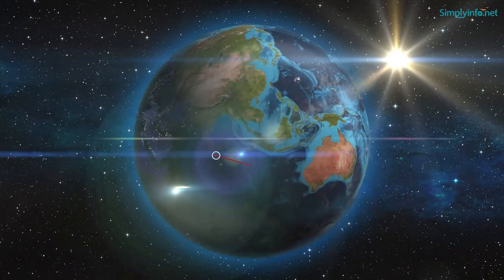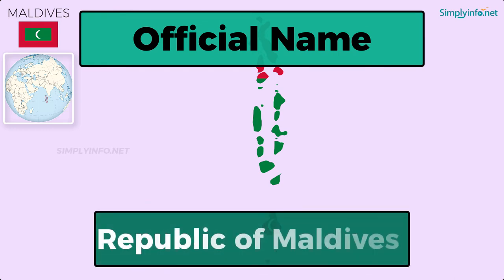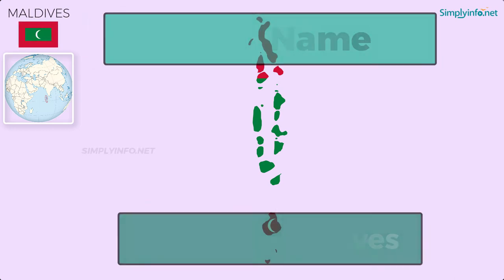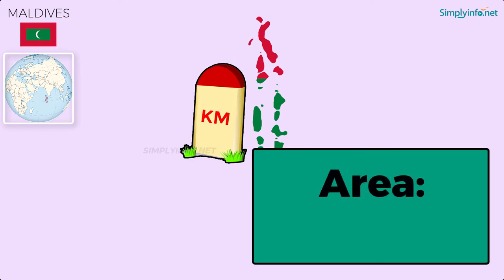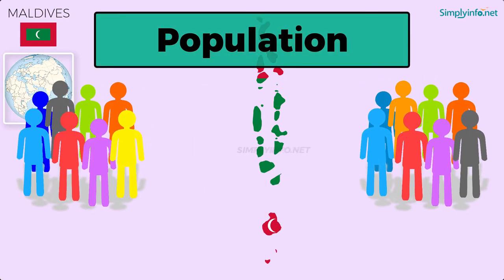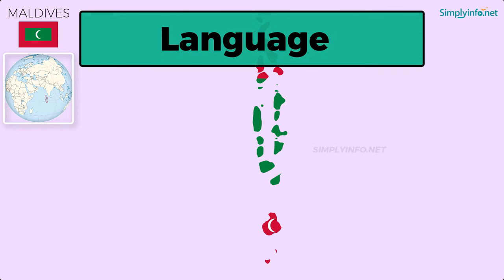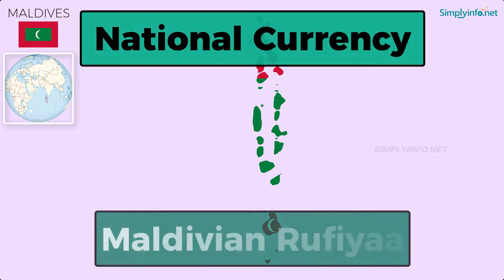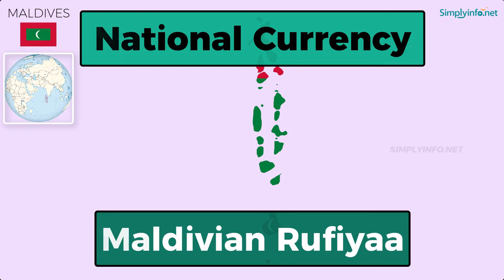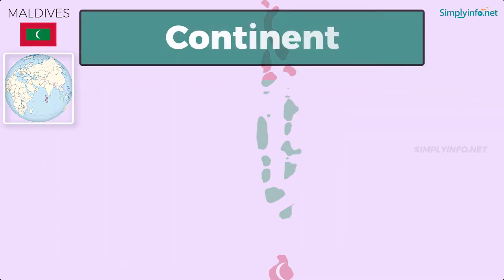Name: Maldives. Official name: Republic of Maldives. Capital: Mali. Area: 298 square kilometers. Population as of 2018: 392,473. Language: Diwehi. National currency: Maldivian Rufia. Largest city: Malay. Continent: Asia.